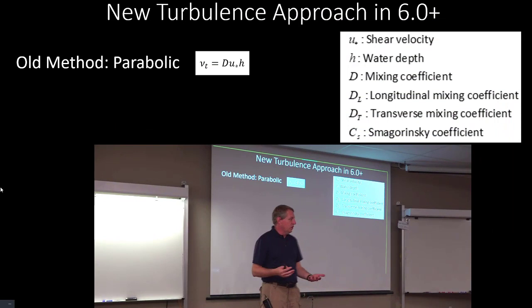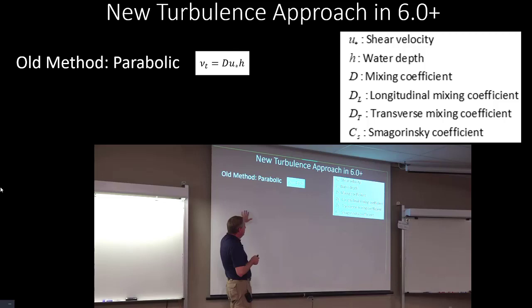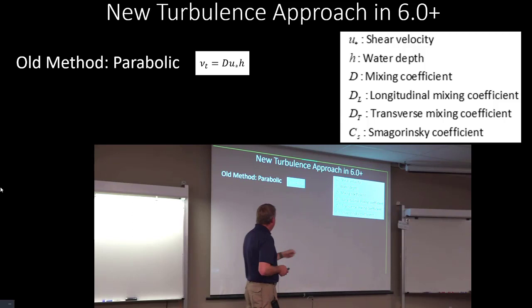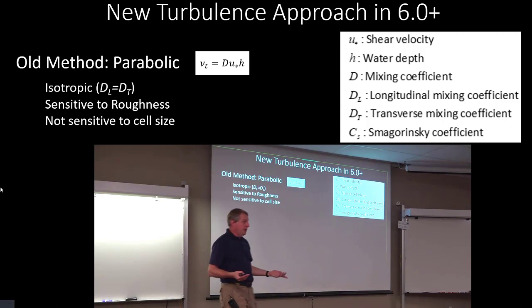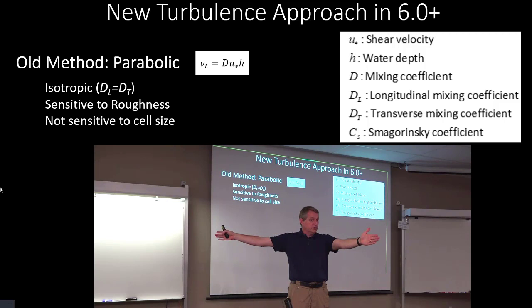The other thing that Alex did in 6.0 is we added a new turbulence approach. This is the classical turbulence approach. This is your eddy viscosity, which is just essentially the coefficient of that diffusive term. And it is some mixing coefficient times the shear velocity times the water depth. So that means that it's isotropic, which just means your longitudinal diffusion and your transverse diffusion are the same. That's already a problem.